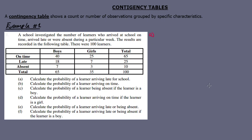Question A: calculate the probability of a learner arriving late for school. The question is not specific — they don't say for girls or boys, but for a learner, meaning you include both boys and girls in your calculation.